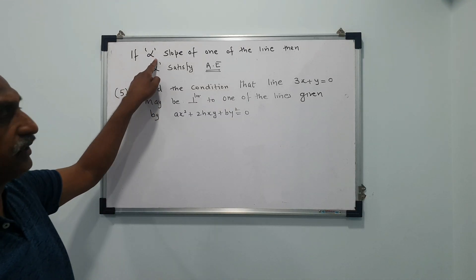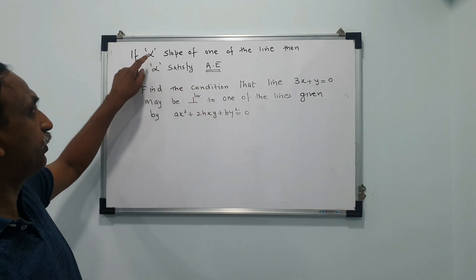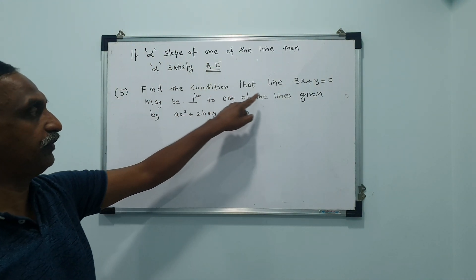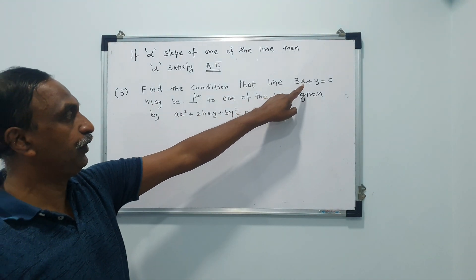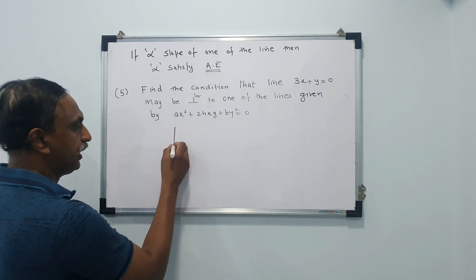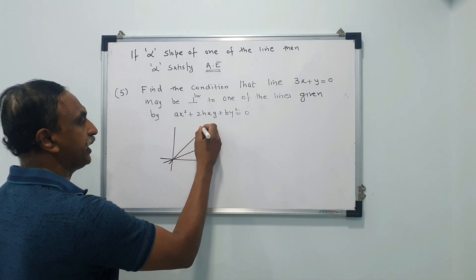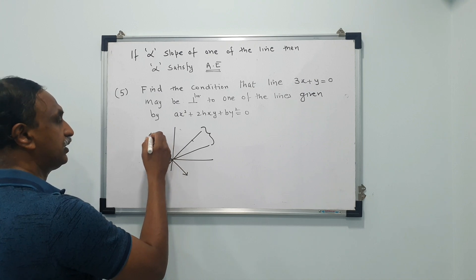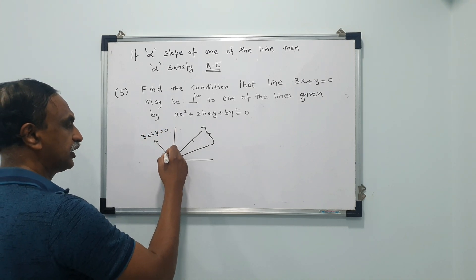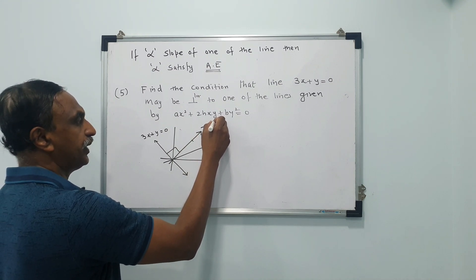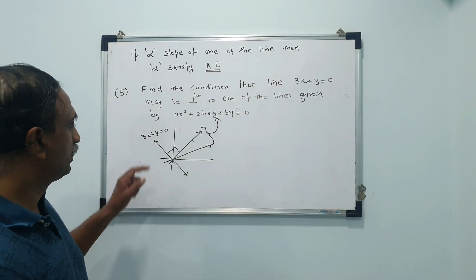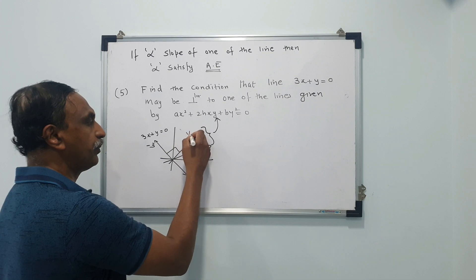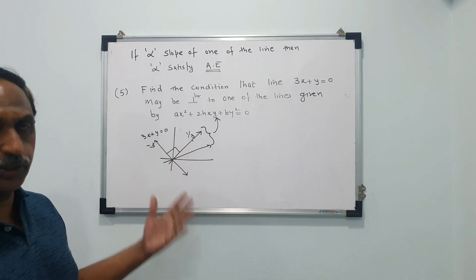Now we have learned this condition. If alpha is the slope of one of the lines, alpha will satisfy the auxiliary equation. We will solve one more problem using this in one step. It is given that the line 3x + y = 0 is perpendicular to one of the lines represented by the combined equation. The slope of 3x + y = 0 is -3, so the slope of the line perpendicular to it will be 1/3. Therefore, 1/3 should satisfy the auxiliary equation.